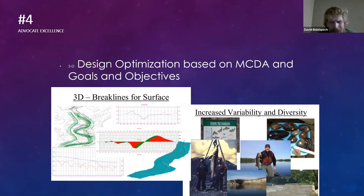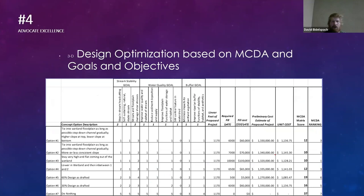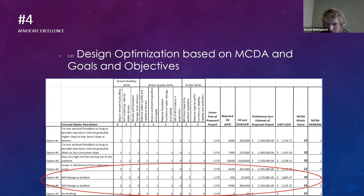We're going to look at how this MCDA was used on a project in Nebraska. We talked about design optimization based on MCDA goals. A lot of times we talk about cut-fill, but this project had a lot more criteria related to increasing variability and diversity of fisheries and species. We were concerned about duck habitat, prairie dog habitat, trout habitat, and other native non-sport fish species.